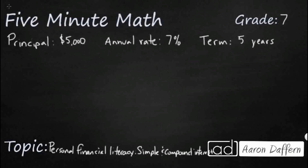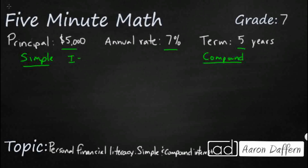So you might have heard of these two terms. Simple interest is money that is paid when you are investing it by the bank or by the company that you're investing with, simply because they are using your money while you're investing it. As a reward, they're going to give you some interest — they guarantee your money and give you a little bit of interest on top of it. Simple interest has a formula on our reference charts: I equals PRT. Our interest equals our principal times our rate times our term.